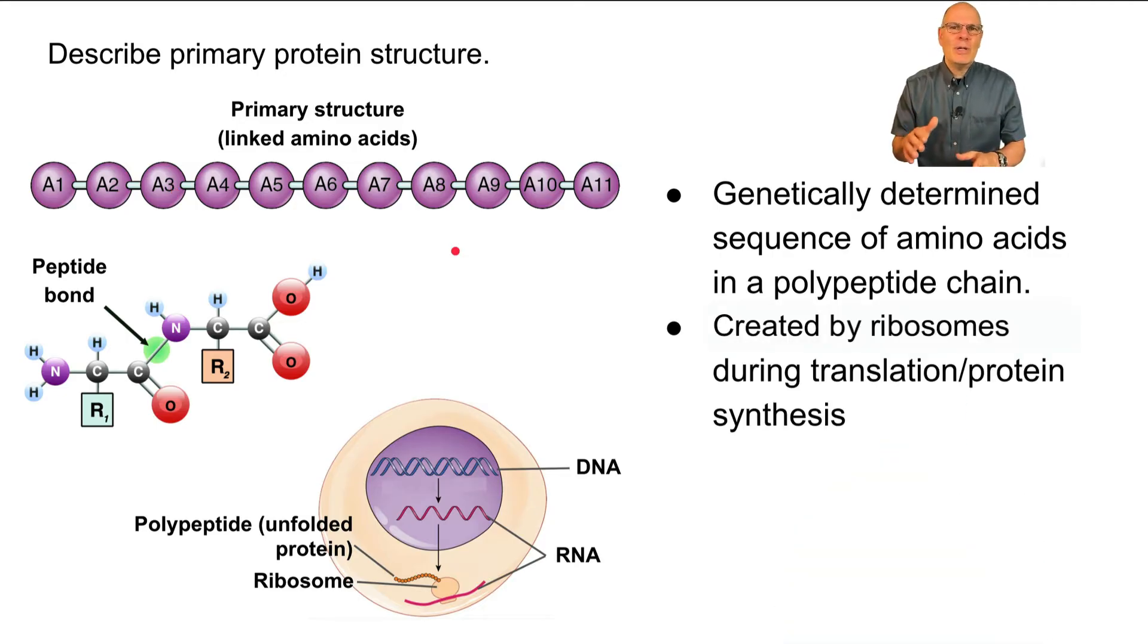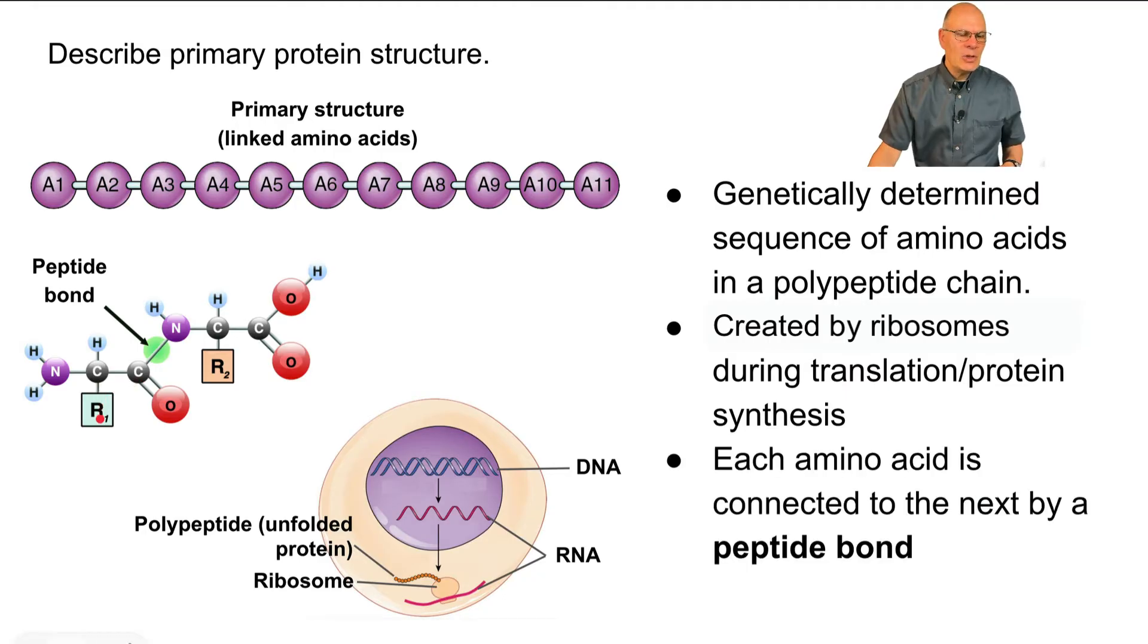Proteins aren't really built by enzymes in the way that everything else is. They're built by ribosomes. The amino acids, here's one, here's another one, they're connected to one another by peptide bonds. So I was saying before, nitrogen, carbon, carbon, nitrogen, carbon, carbon, that's the polypeptide backbone. All of those amino acids linked together, that's primary structure.